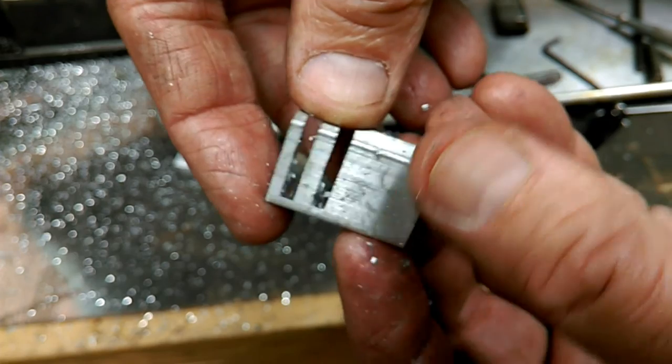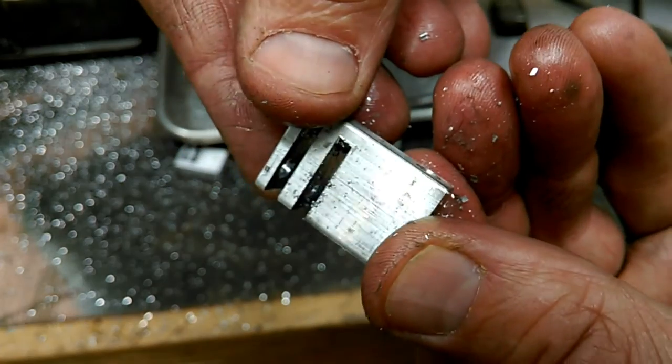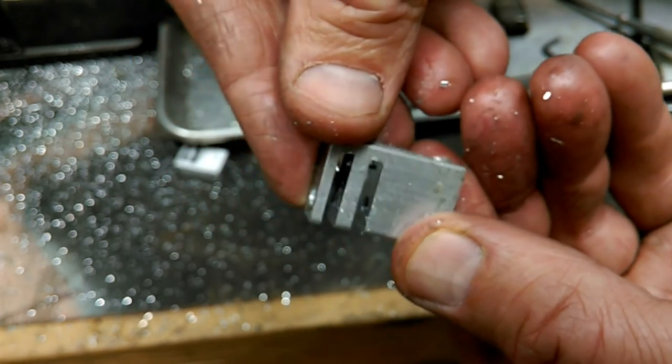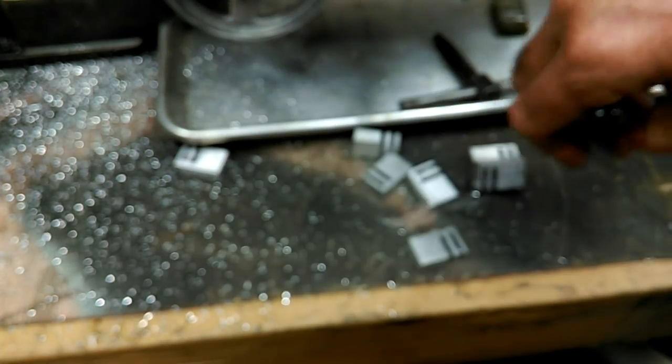Then cut those two slots and now I'm going to round the edges, clean it up a little bit and deburr it and that will be a finished part. I just made eight of those.